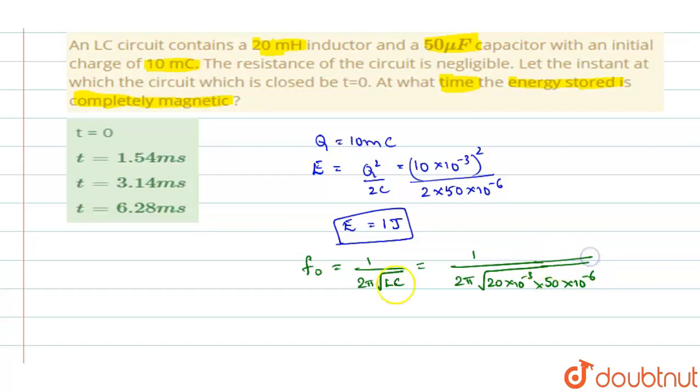So this when you are simplifying it, F0 comes out to be 159.24 Hz.